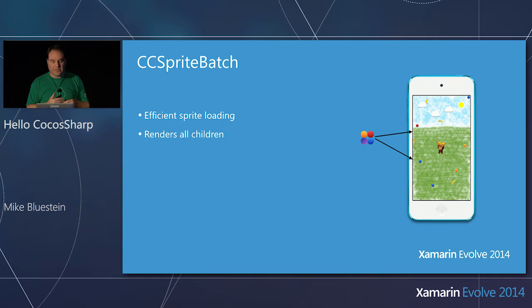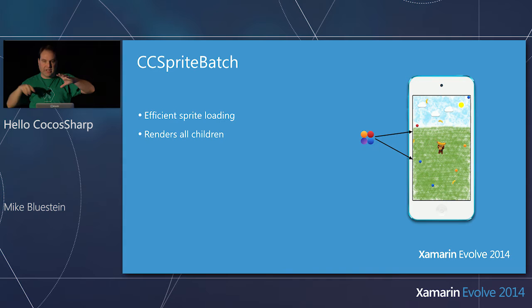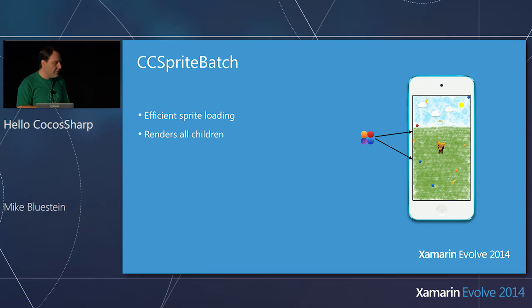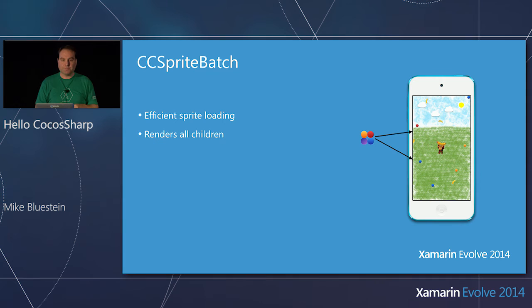A more efficient way than loading loose images is a thing called a sprite batch. This is really one of the biggest performance wins when working with this. In the example, I have circles to represent balls in a sprite sheet — a single image containing a whole bunch of other images with metadata about where each image is. Also called texture atlases. The point is it gets rendered in one pass, so underneath the covers there's one GL bind call rather than a bunch of separate calls. So it's a more efficient way to load sprites with less interaction between the GPU and software.